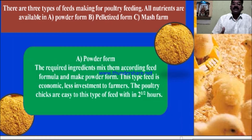There are 3 types of feeds made for poultry feeding. All nutrients are available in powder form, pelletizer form, and mash form. In the powder form, the required ingredients are mixed according to a feed formula and made into powder. This type of feed is economic and requires less investment from farmers.